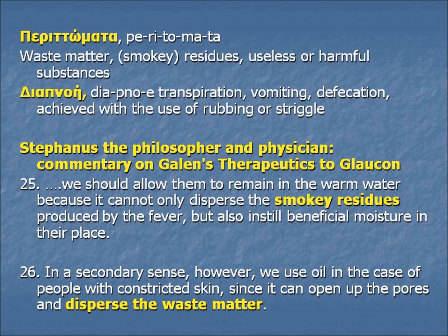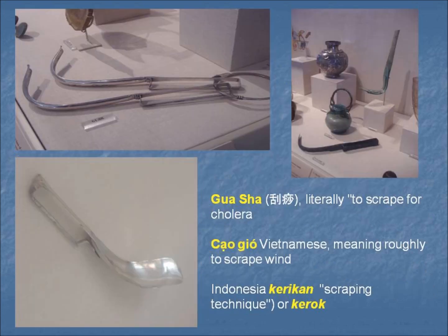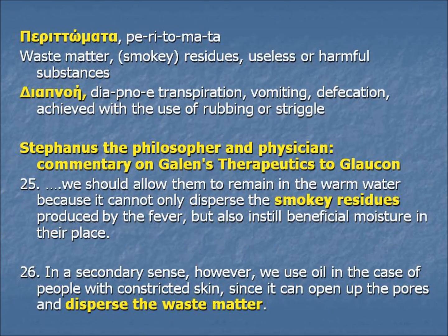So we can verify the importance of dispersing this material from many sources. The ancient Greeks would use the striggle — you can see an ancient Greek striggle in the upper right corner; the pictures on the left are Roman striggles, more refined. These techniques have been used by many cultures: Gua Sha, which is Chinese in origin; Cao Gio, which is Vietnamese; Indonesian approaches Kerikan and Kerok — they all mean some form of scraping technique.